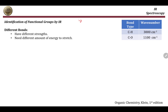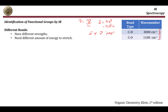A wave number equals the frequency of light divided by the speed of light, C. This means that energy, which equals Planck's constant times frequency, is also equal to Planck's constant times wave number times C. So energy and wave number are proportional — as the wave number increases, the energy needed to stretch the bond increases. Stretching a carbon-hydrogen bond therefore requires more energy than stretching a carbon-oxygen bond.